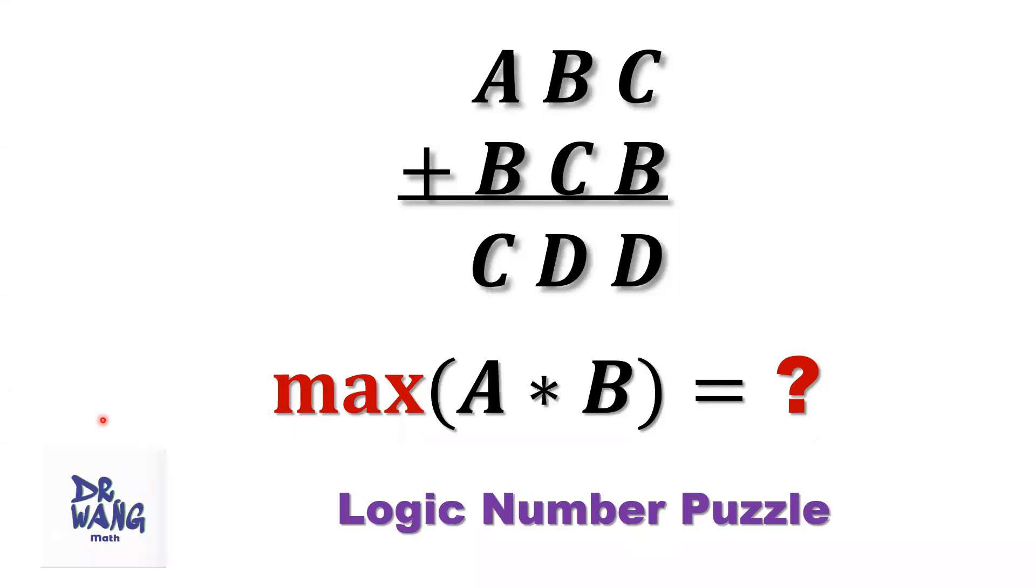Hello everyone, I'm Dr. Wen. Here is the question. A, B, C plus B, C, B equals C, D, D. All three digit numbers here. We want to find what is the maximum value of the product of A times B.